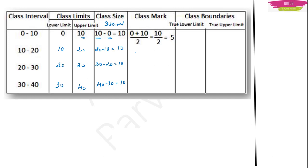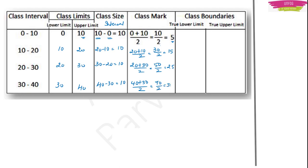Then class mark. To find the class mark, you add both the limits and divide by 2. So 0 plus 10 by 2 equals 5. Then 20 plus 10 by 2 equals 30 by 2 equals 15. Then 20 plus 30 by 2 equals 50 by 2 equals 25. Then 30 plus 40 by 2 equals 70 by 2 equals 35.